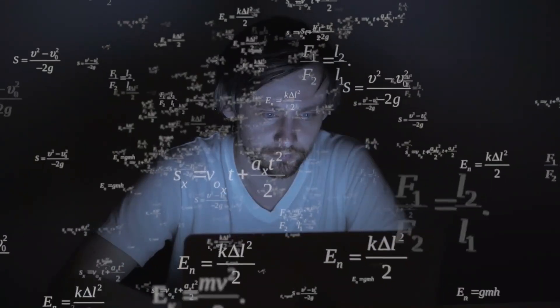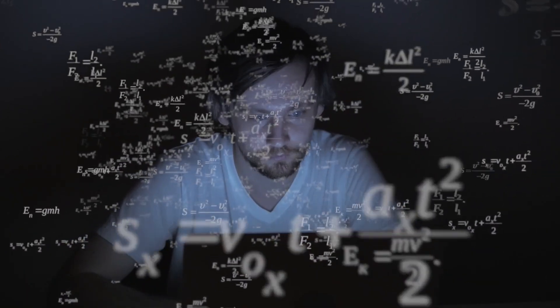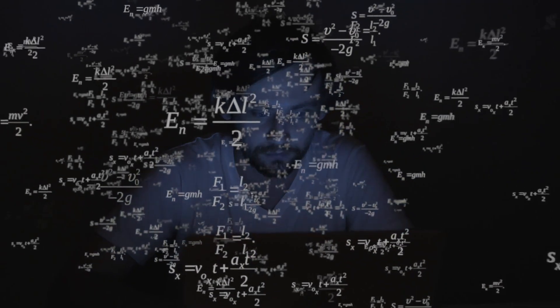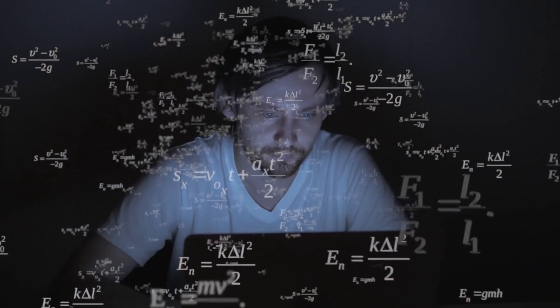Fact number six: the human brain's computational power is mind-boggling. It's estimated that the brain can perform over a quadrillion calculations per second, far surpassing the most powerful supercomputers we have today.